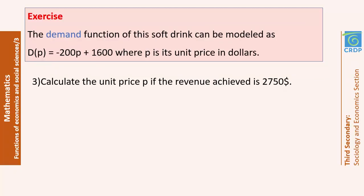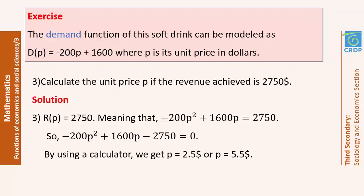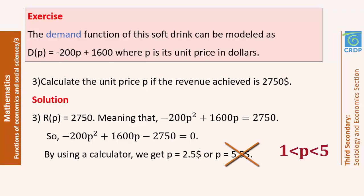In part 3, calculate the unit price P if the revenue achieved is $2,750. Solving the second-degree equation gives P = 2.5 dollars or P = 5.5 dollars. Since P must be between $1 and $5 for this soft drink, P = 2.5 is accepted while P = 5.5 is rejected.